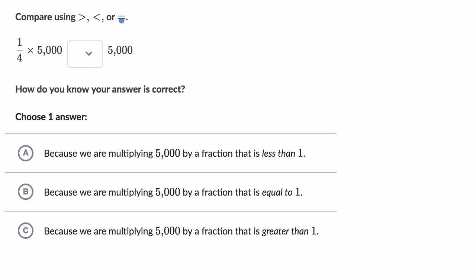So what do you think it is? How does one-fourth times 5,000 compare to 5,000? And how do you know your answer's correct? Pick one of these choices as well. Pause the video and have a go at that.